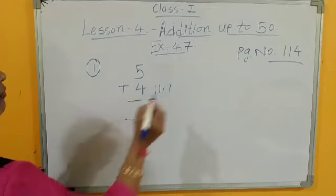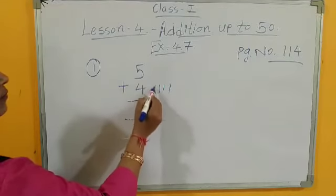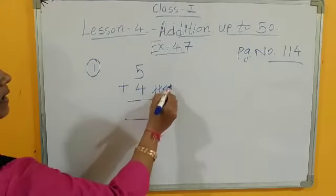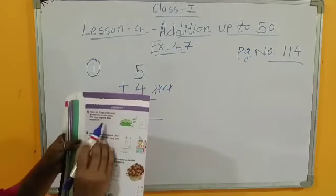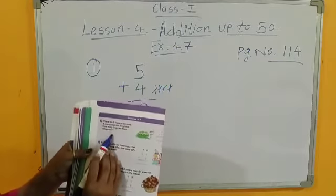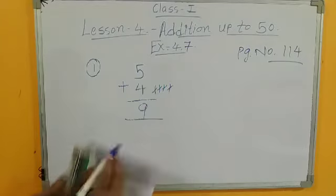1, 2, 3, 4. So after 5, 6, 7, 8, 9. So our answer is 9. So how many frogs are there all together? There are 9 frogs.